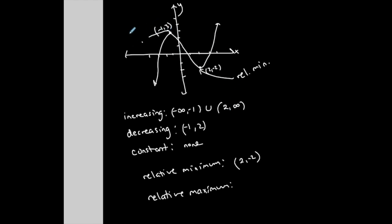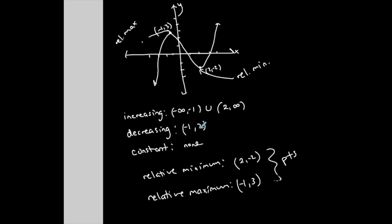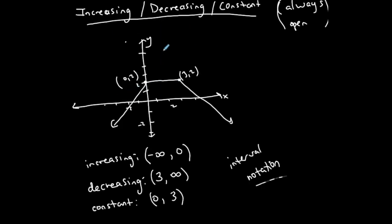This point here would be called a relative maximum. It's not the highest point on the graph overall — the graph continues up forever — but relative to this location, I have a hill, and the point at the top is (−1, 3). That is the relative maximum. These are points, ordered pairs — do not confuse them with intervals. The first graph has no relative mins or maxes because there's no hole or hill, but this graph does.